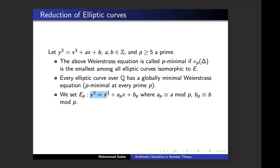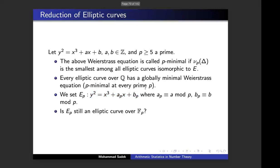Starting with such an elliptic curve, I'll consider the coefficients A and B modulo p — that gives an elliptic curve not over the rational field but over a finite field. One elliptic curve over ℚ gives rise to infinitely many elliptic curves over finite fields, since I have infinitely many primes. The next question is: when I reduce my elliptic curve modulo p, is there a guarantee that I still have an elliptic curve over the finite field?